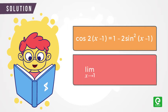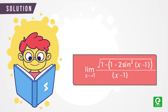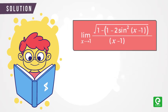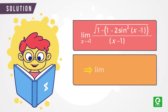Limit x approaching 1: √[1 - cos(2(x - 1))] / (x - 1). So by simplifying we get limit x approaching 1: √[2sin²(x - 1)] / (x - 1).